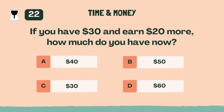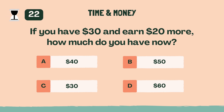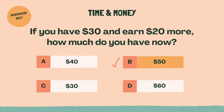If you have 30 dollars and earn 20 dollars more, how much do you have now? The answer is B, 50 dollars.